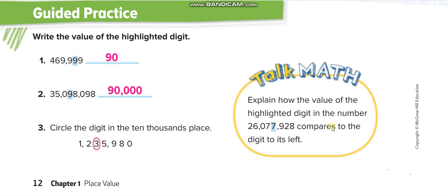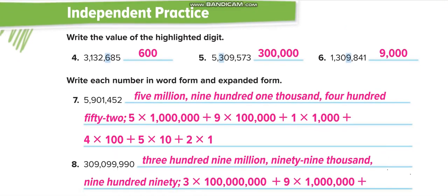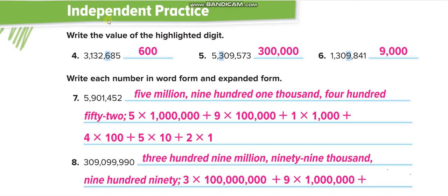Moving to page 13: 6 in the hundreds place is 6 times 100 equals 600. Then: ones, thousands, hundred thousands — how many hundred thousands? Three, so 300,000. Then ones, thousands — how many thousands? The digit is 9, so 9,000.